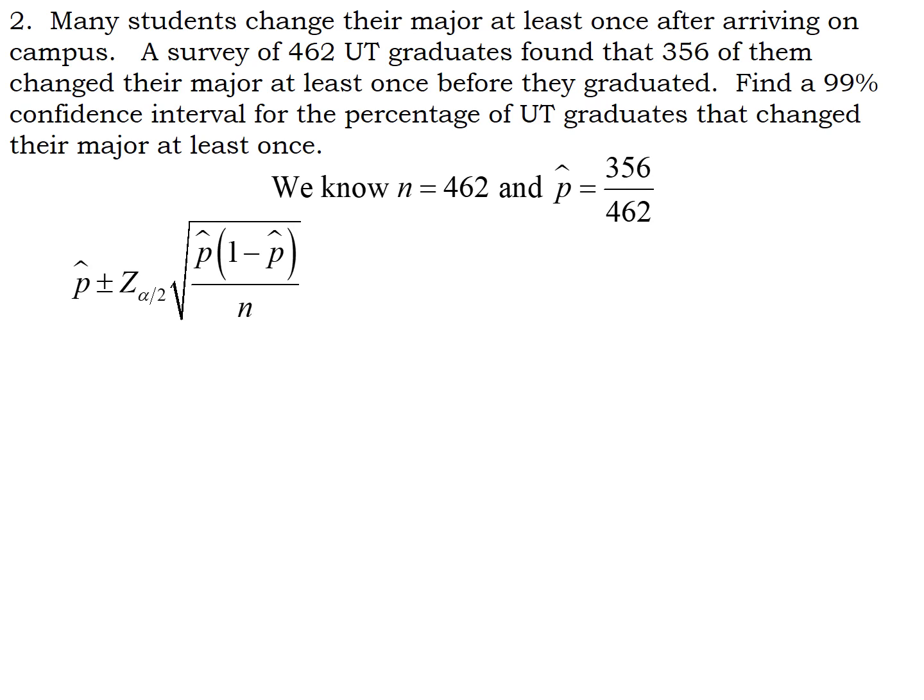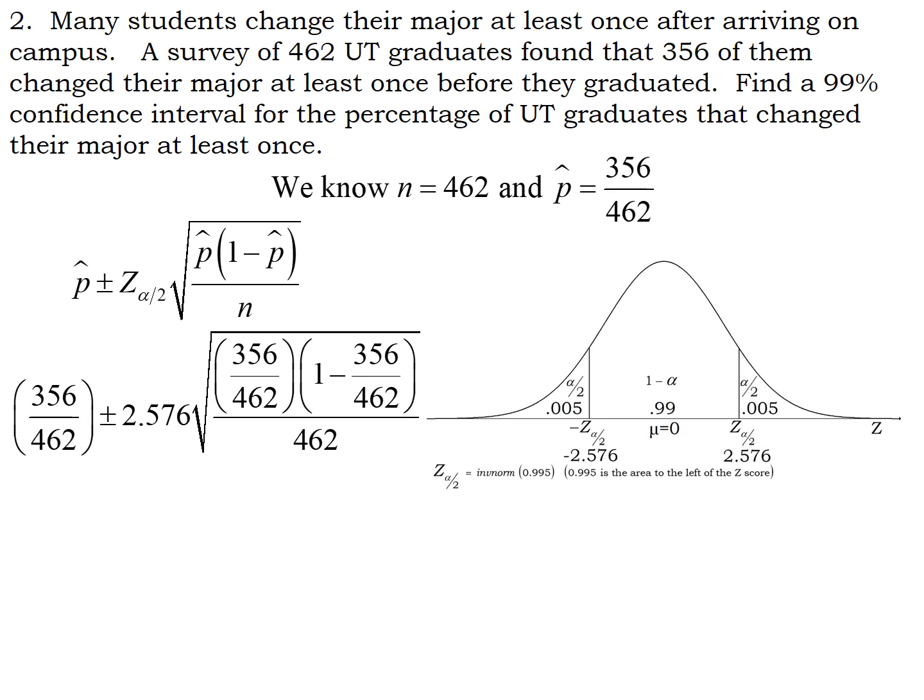So we know p-hat and n. It's the Z score we got to do the work on. We want to be 99% confident. So we've now done multiple confidence intervals that were based on Z scores that were 99% for our confidence level. So the Z score is always going to be the same, right, under these conditions. Every 99% confidence level based on the Z score uses a Z score of 2.576. So we're going to plug in all of our numbers, simplify down, and we end up with 77.1%.